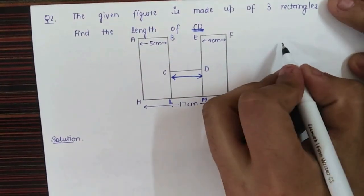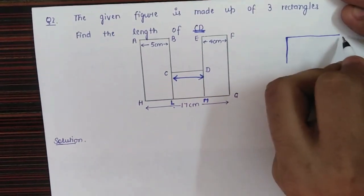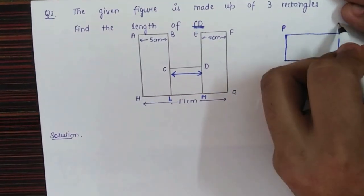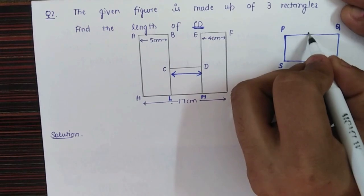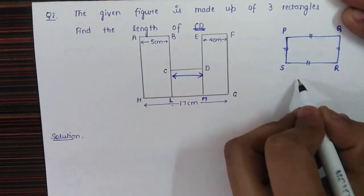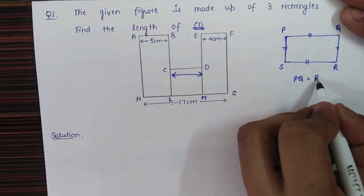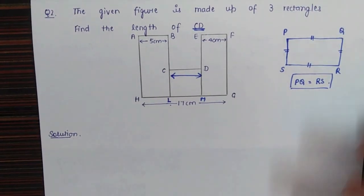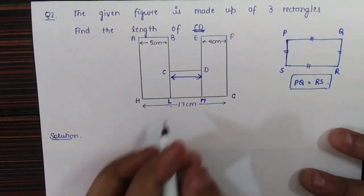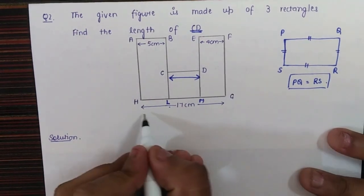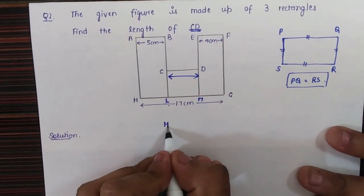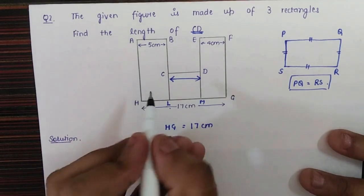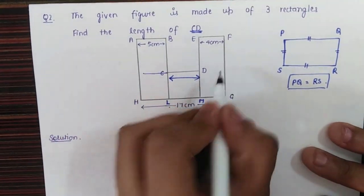If we draw a rough rectangle PQRS, we know that for a rectangle, opposite sides are equal — PQ equals RS. We are going to apply this same property here. To calculate CD, we know the total length of HG is equal to 17 centimeters. We need to subtract the known sections from HG.